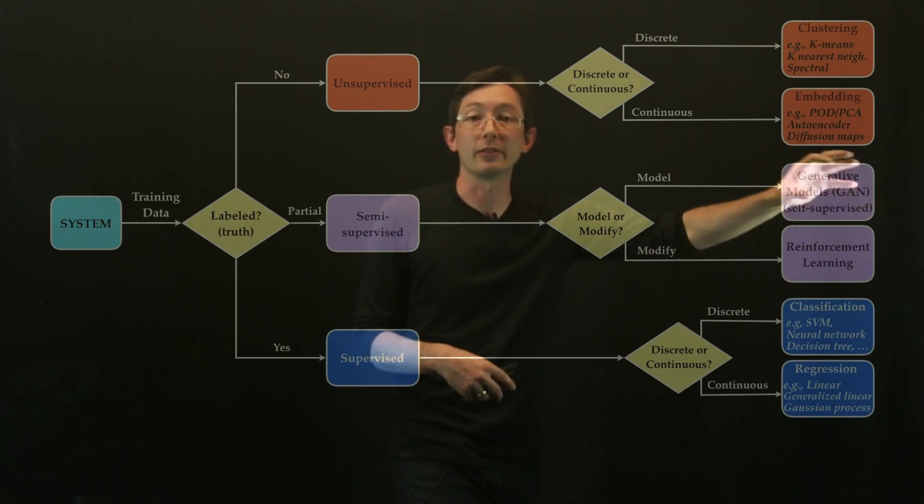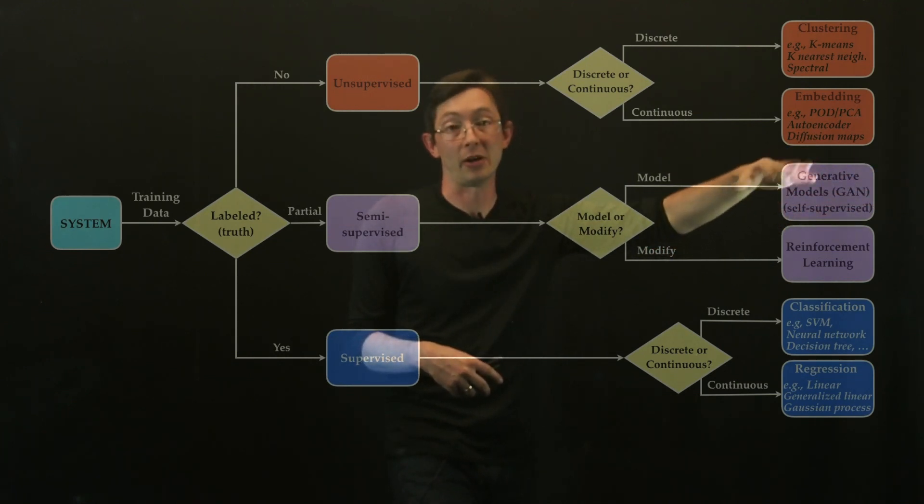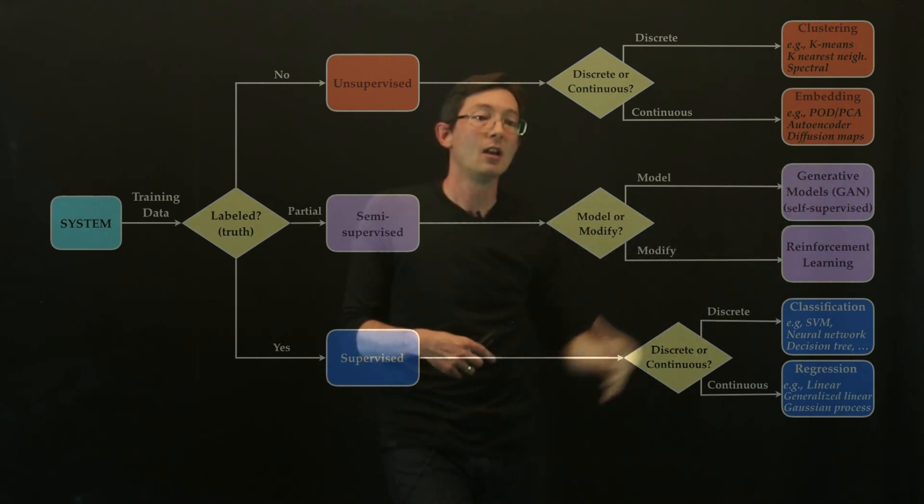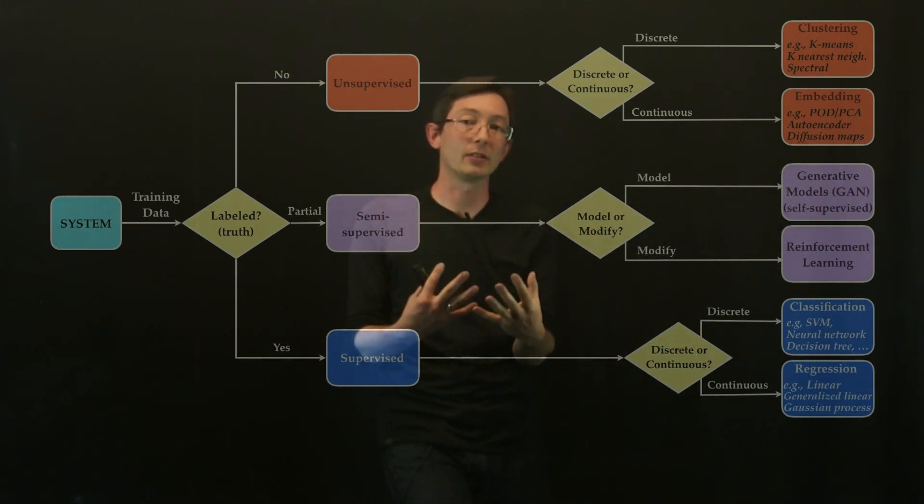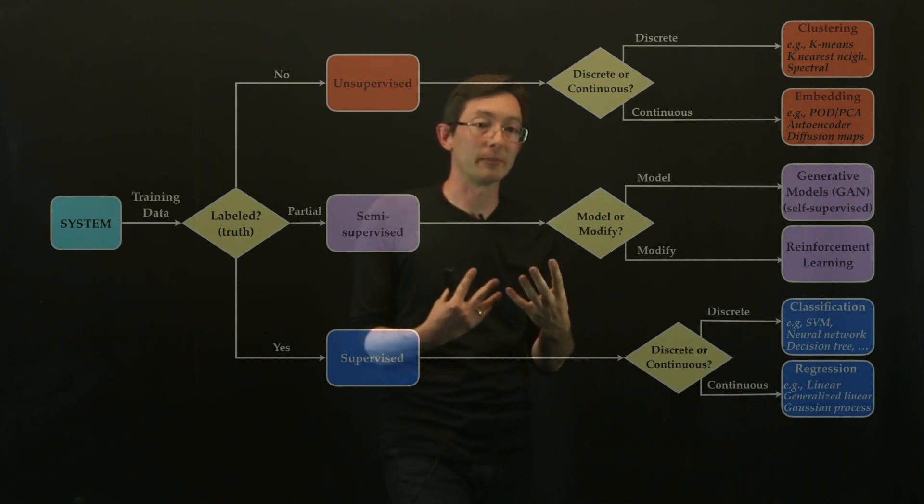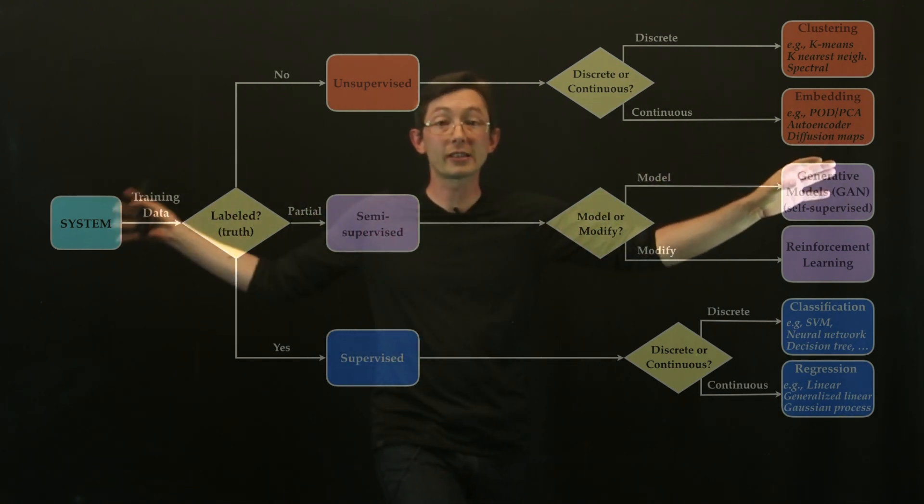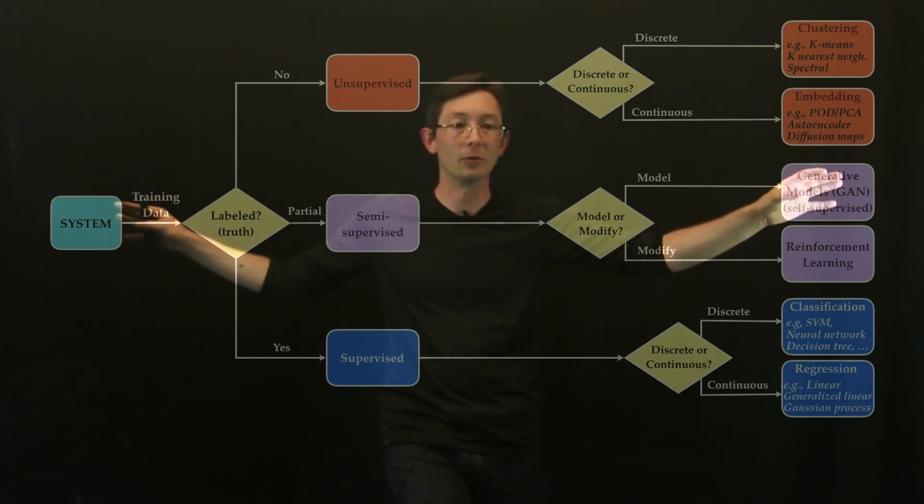then there's a whole bunch of algorithms in the generative models family. So GANs, generative adversarial networks, are a really popular neural network architecture that is allowing you to start generating new data that looks like it came from this system. Very cool.